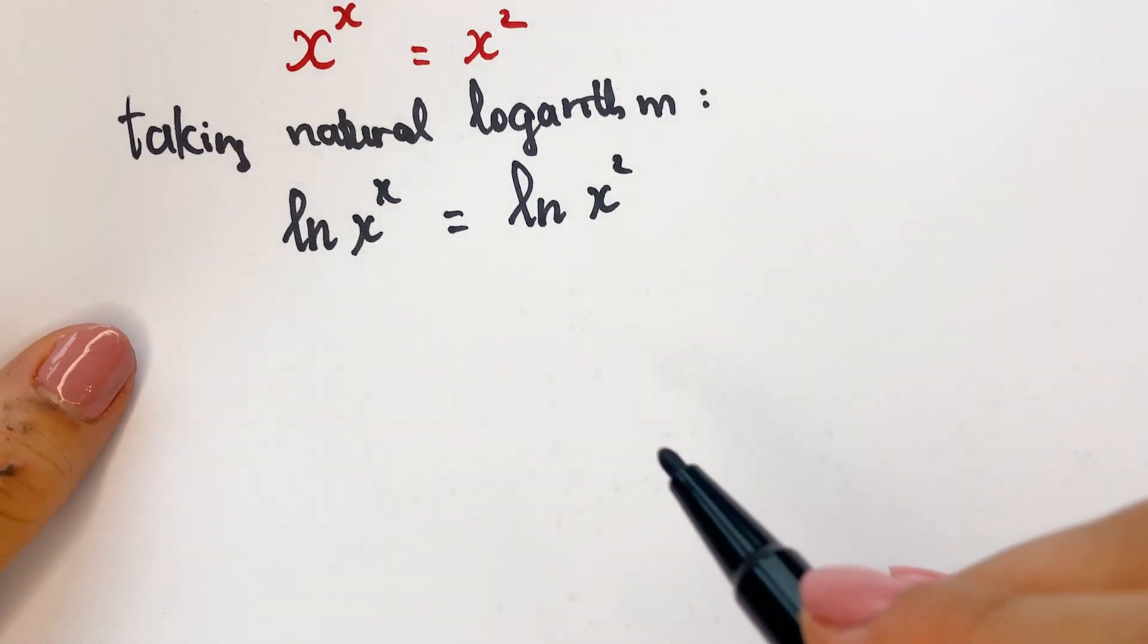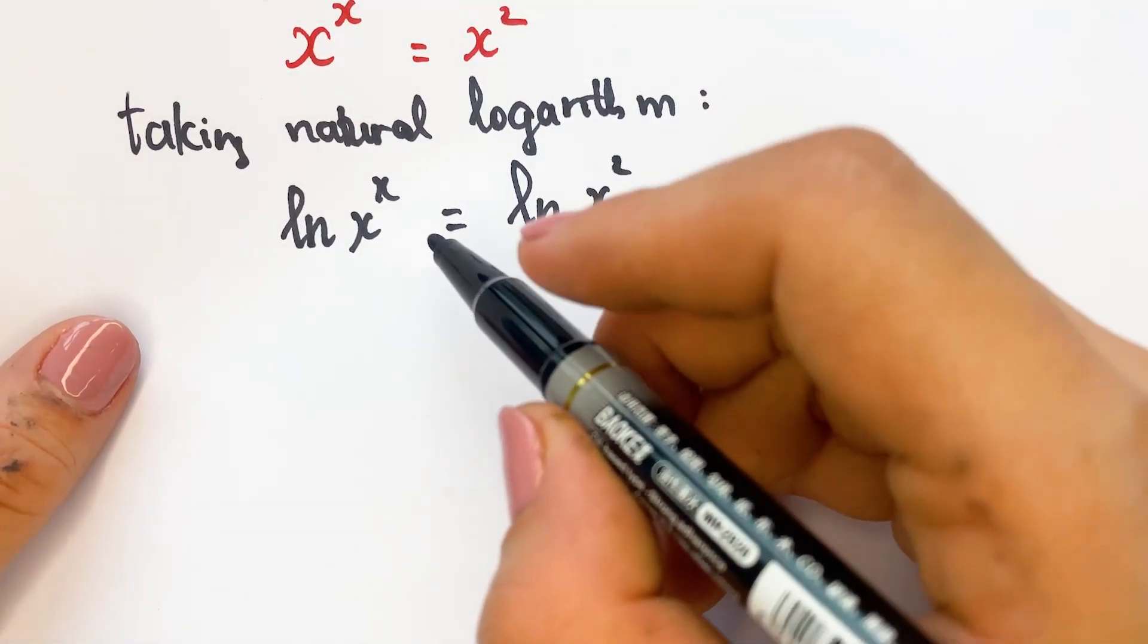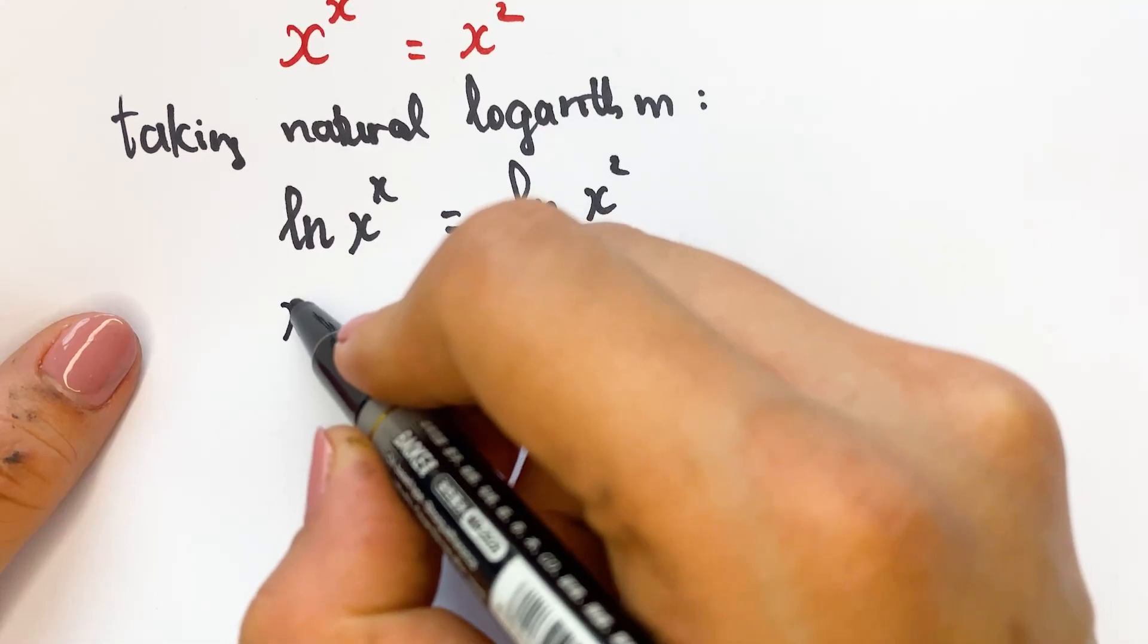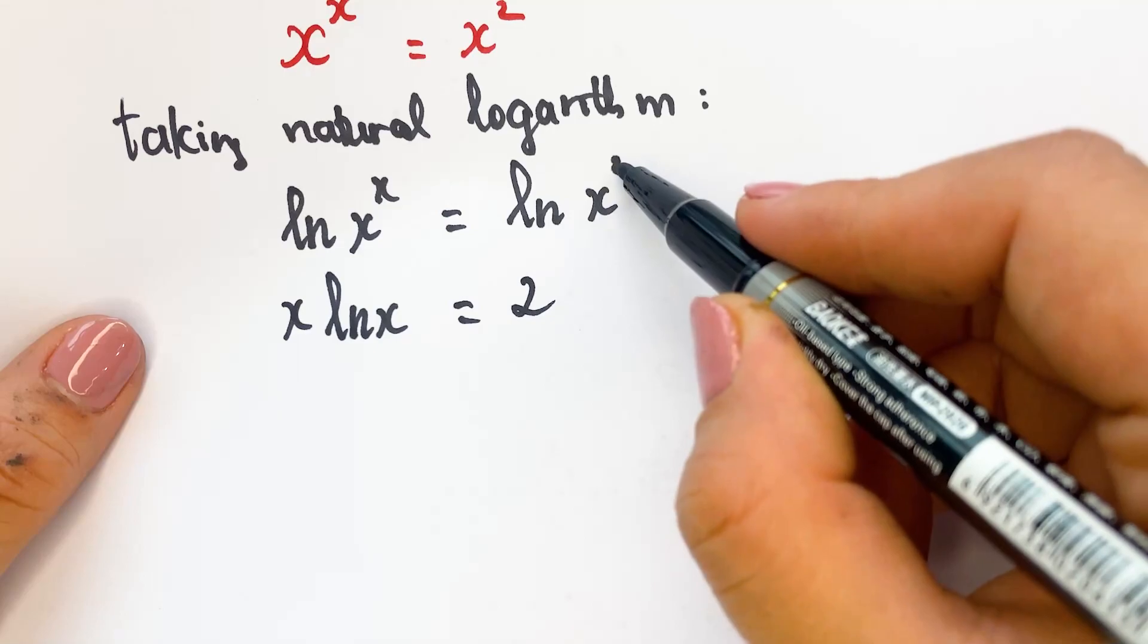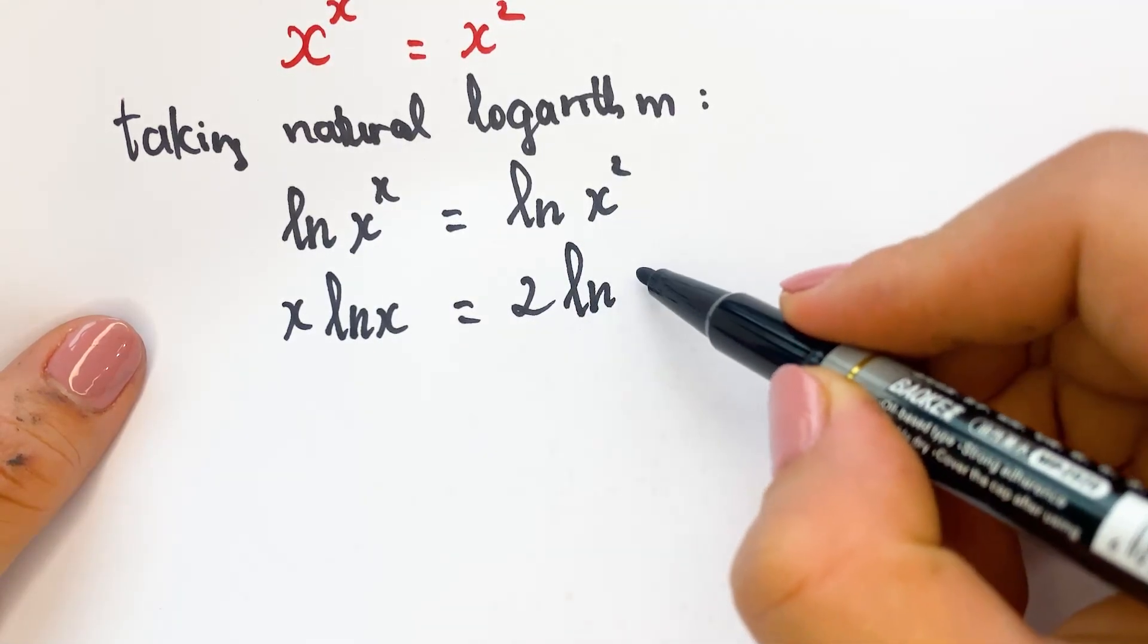And so we can have x ln x equals 2 ln x.